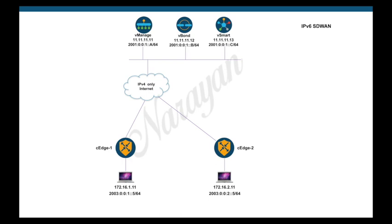In the previous video, we looked at tunneling IPv6 traffic over an IPv4 enabled SD-WAN fabric overlay. In this video, we will extend the same to complete IPv6 — that is, utilize an IPv6 underlay to connect to the controllers as well as establish IPsec tunnels between the edge devices.